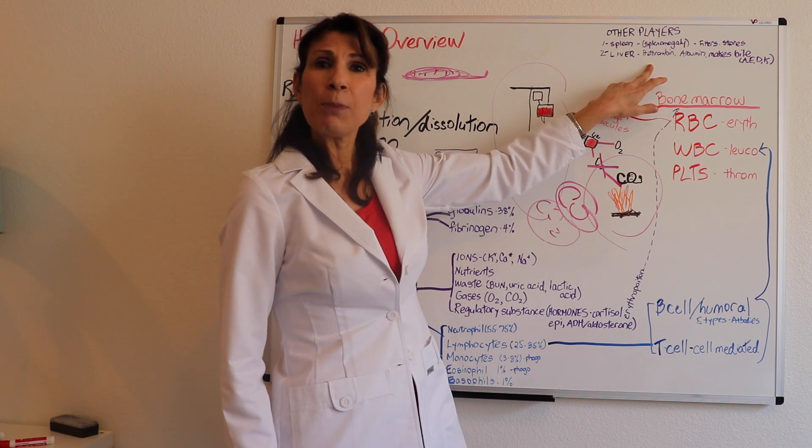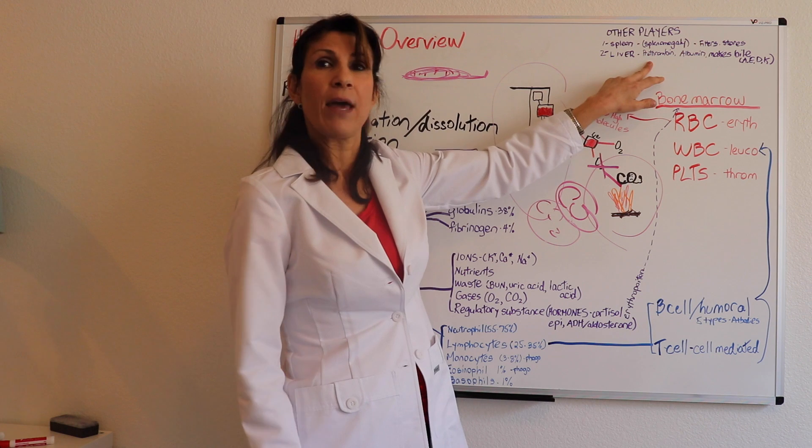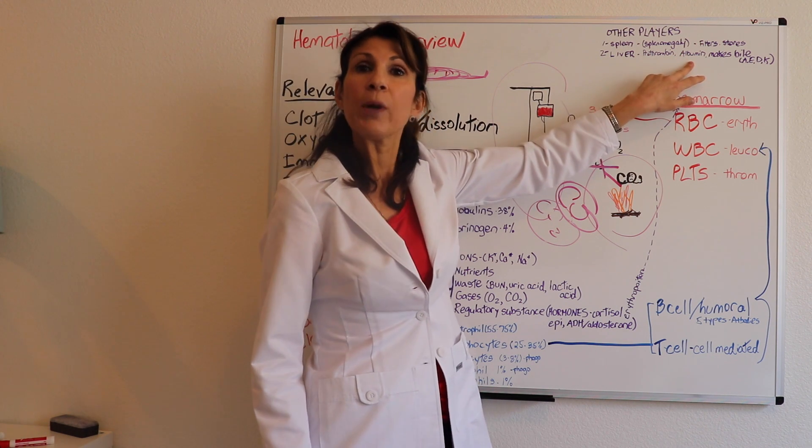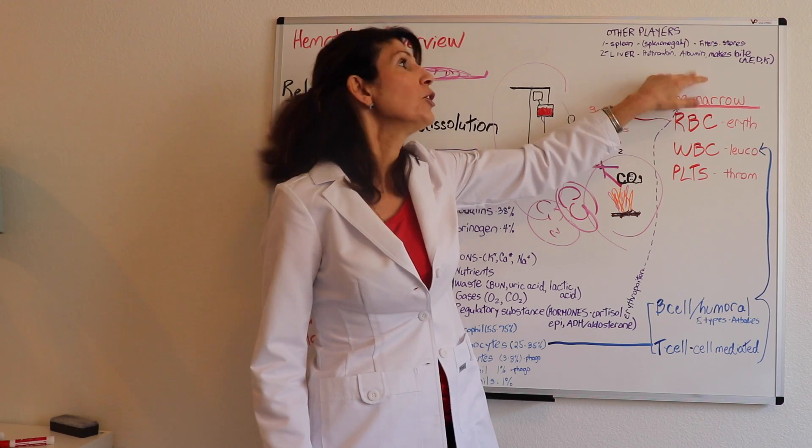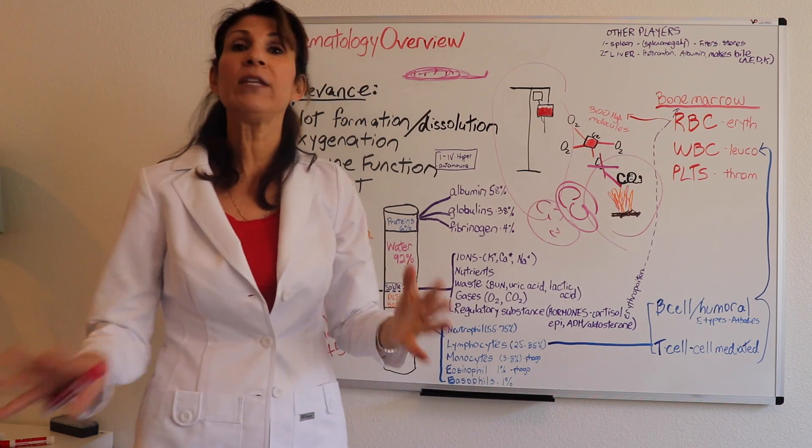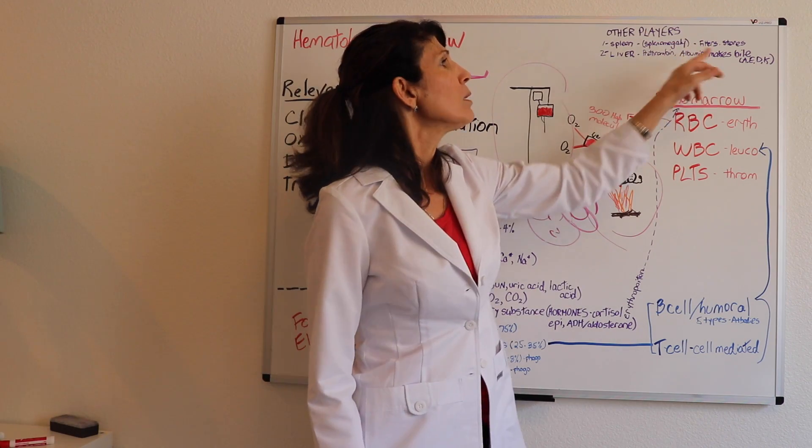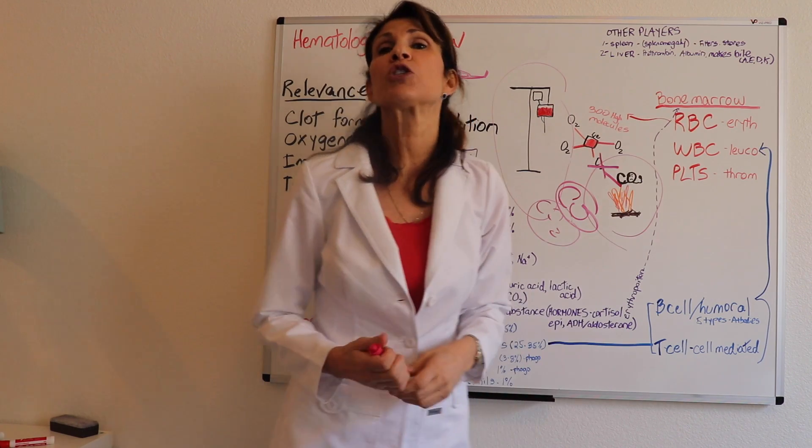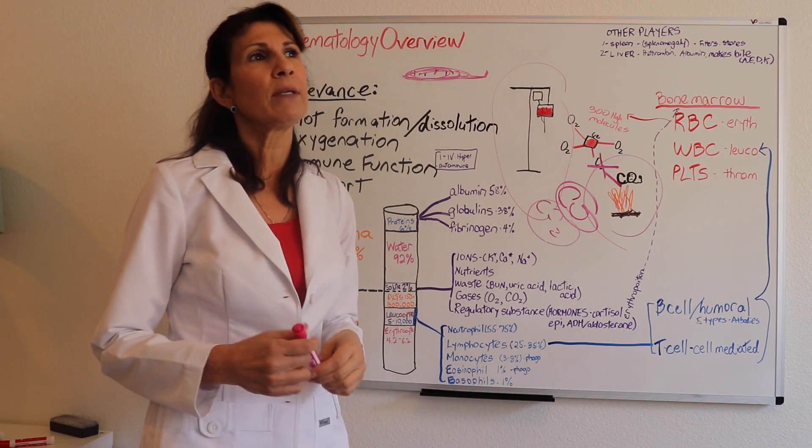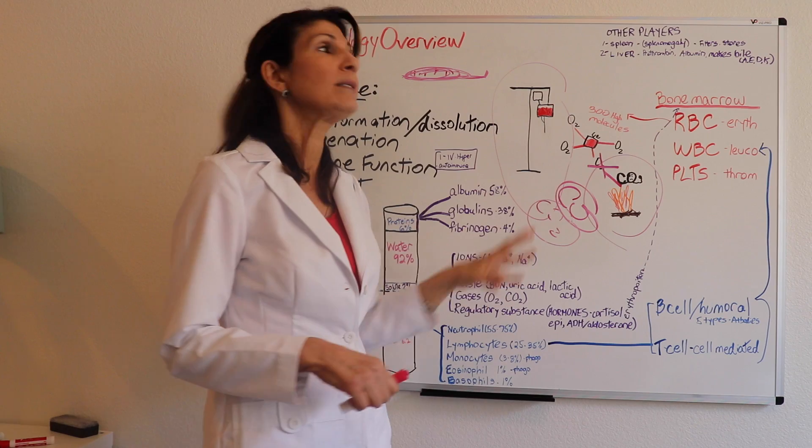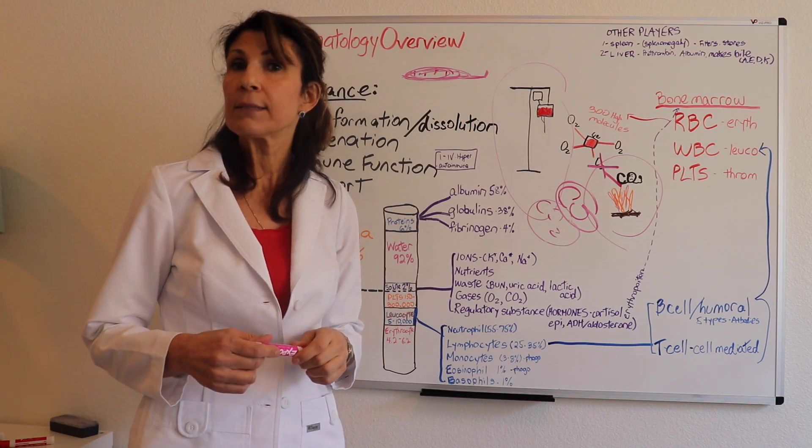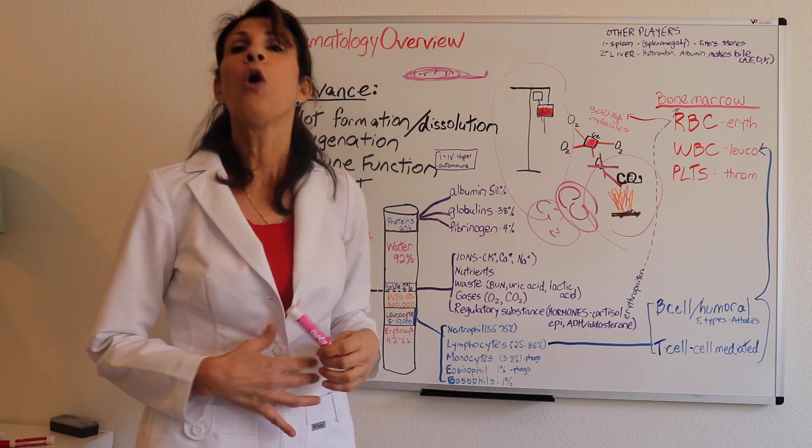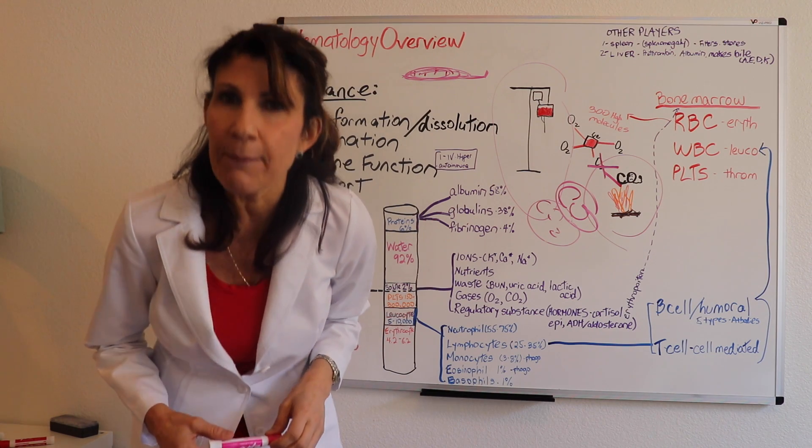Prothrombin—that's a plasma protein. Guess where it's made? The liver. Albumin—guess where albumin is manufactured? In the liver. So if you have liver failure, you're going to have a diminished amount of all these plasma proteins. The liver also manufactures bile. Why is that even significant now in this series? Because without bile, you are not able to absorb fats or fat-soluble vitamins.